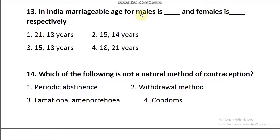Looking at the options: 21 and 18, 15 and 14, 15 and 18, 18 and 21 — the correct answer is 21 and 18, which is option number one. In some tribal communities child marriages occur at 15 and 14, but that is not accepted by the government. As per government rule, 21 for males and 18 years for females is the marriageable age.